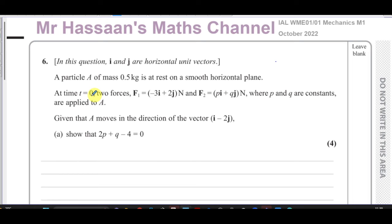At time t equals 0, two forces F1 and F2 where F1 is minus 3i plus 2j Newtons and F2 is pi plus qj Newtons, where p and q are constants, are applied to A. Given that A moves in the direction of the vector i minus 2j, show that 2p plus q minus 4 equals 0.